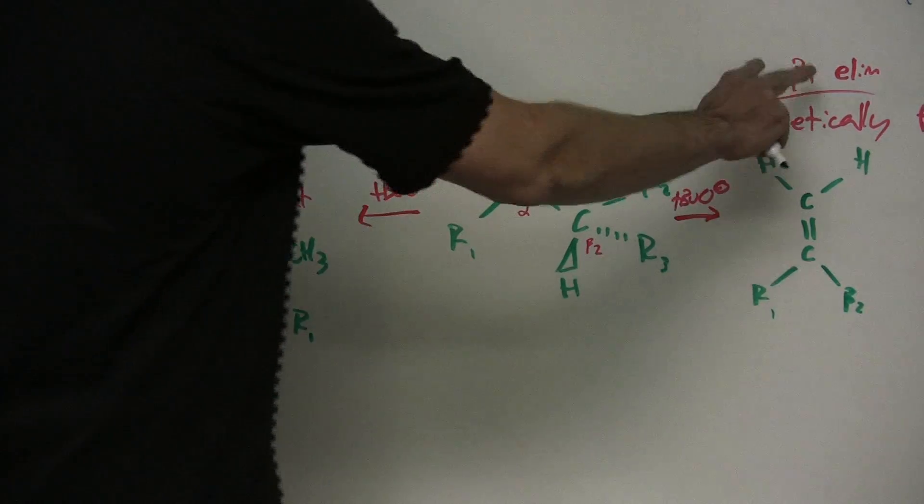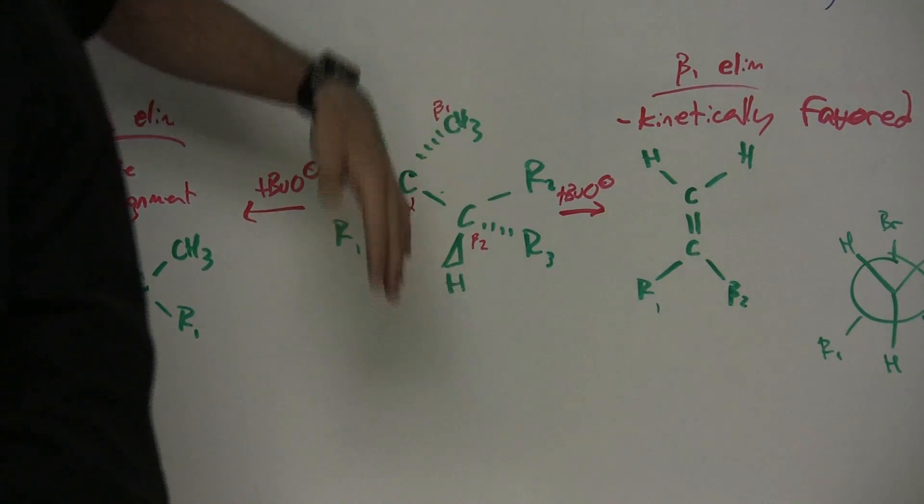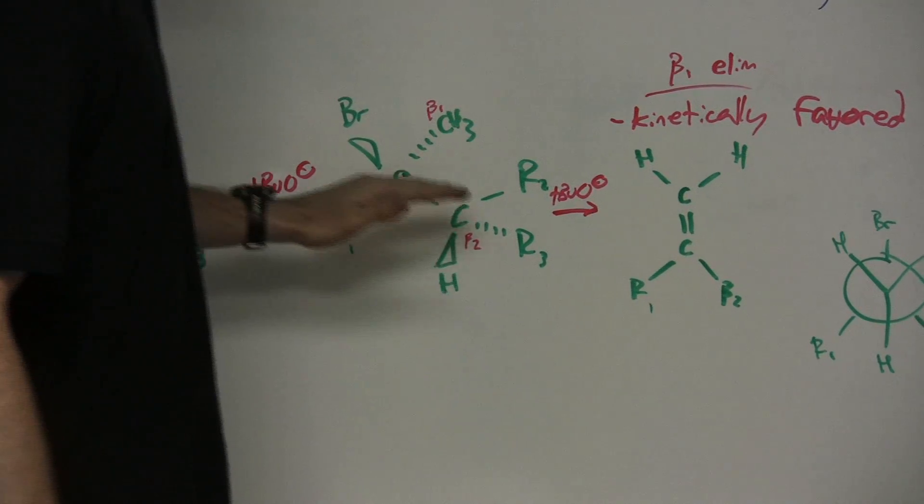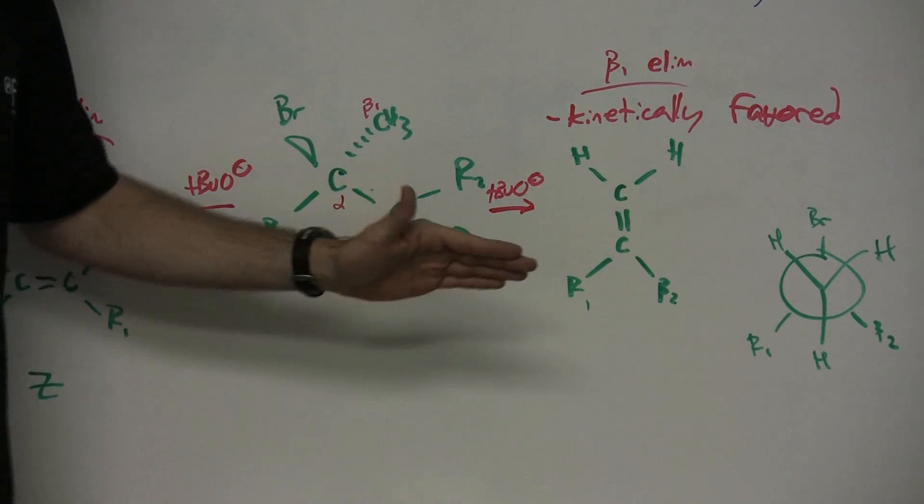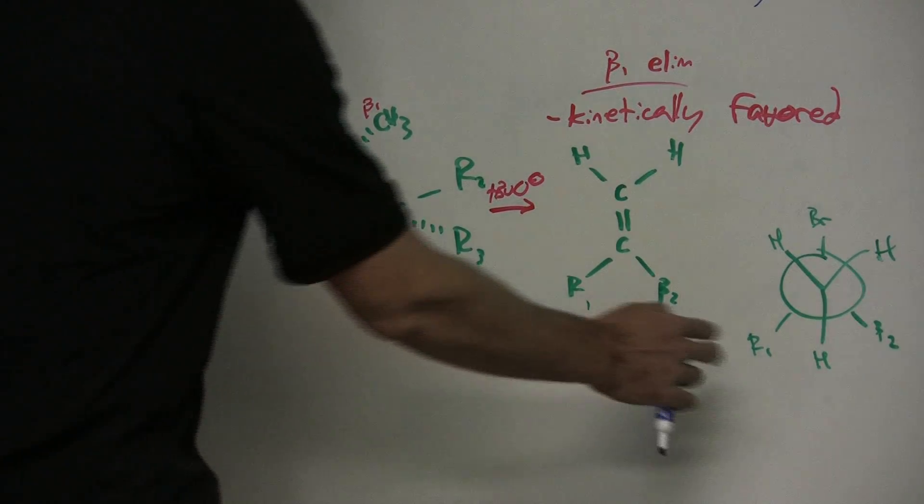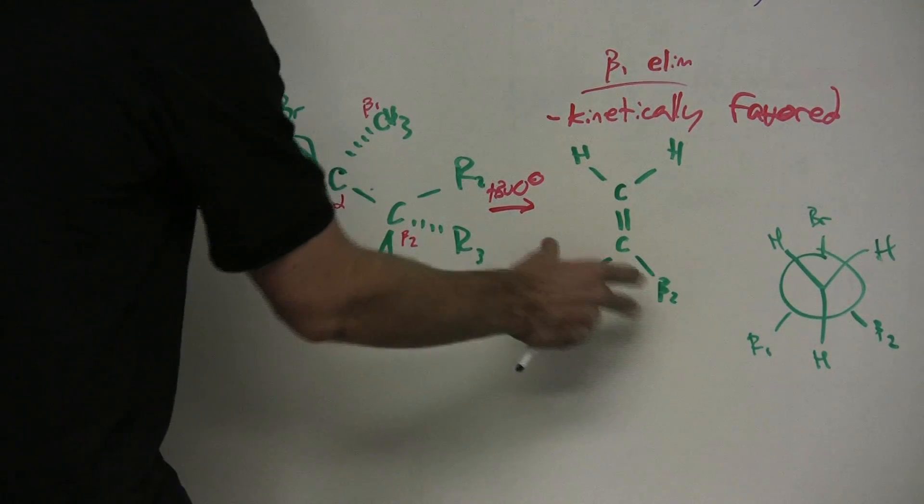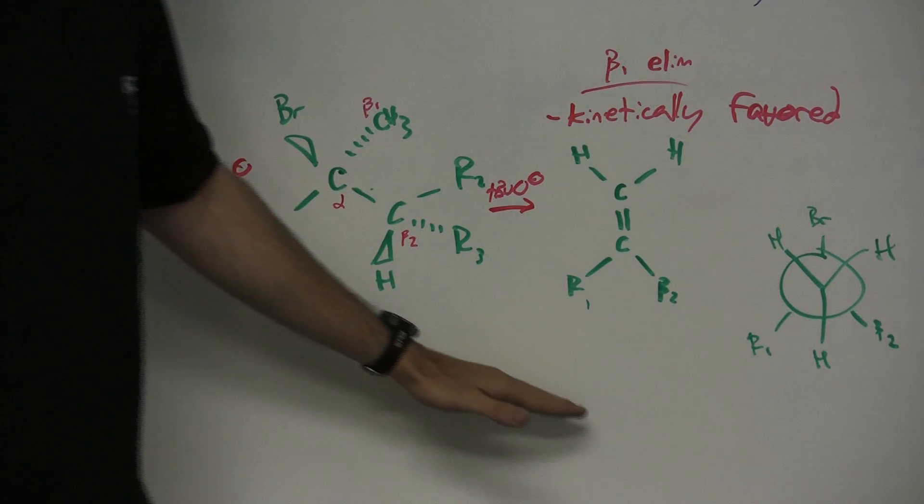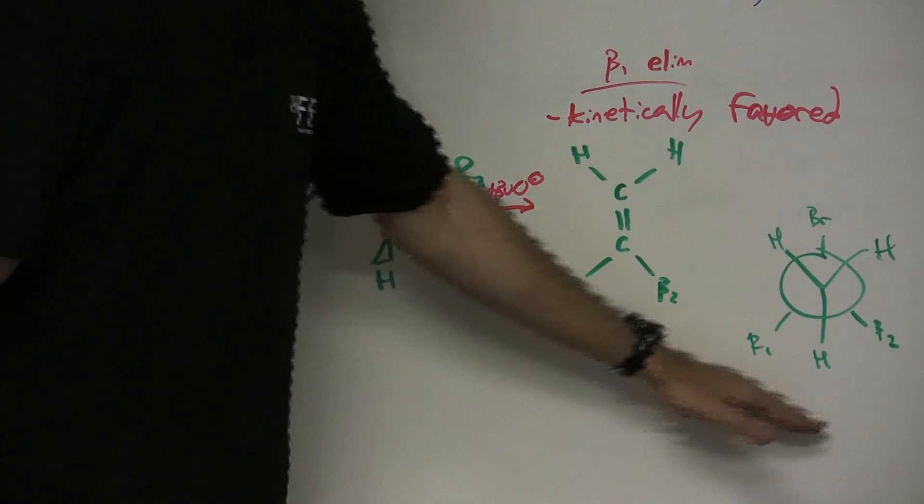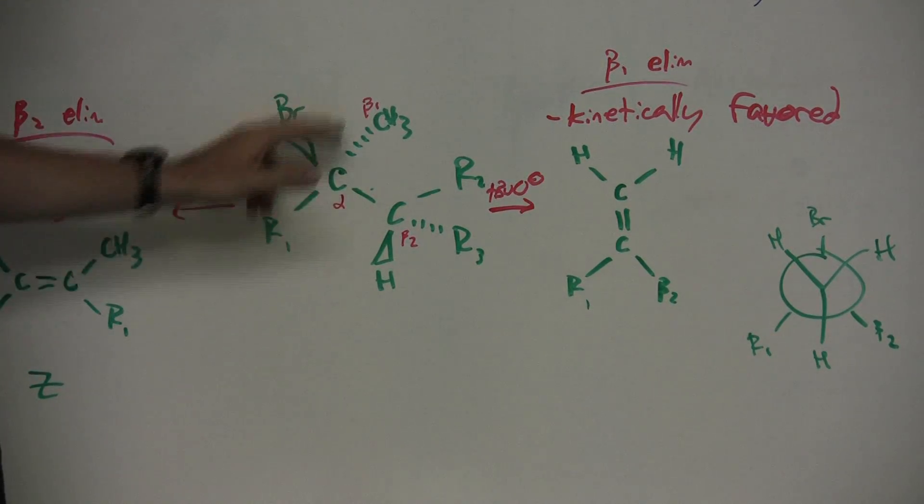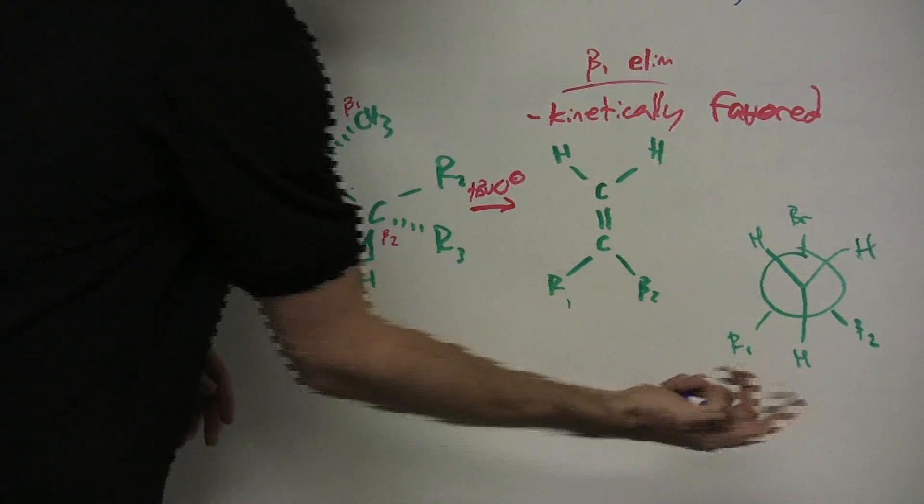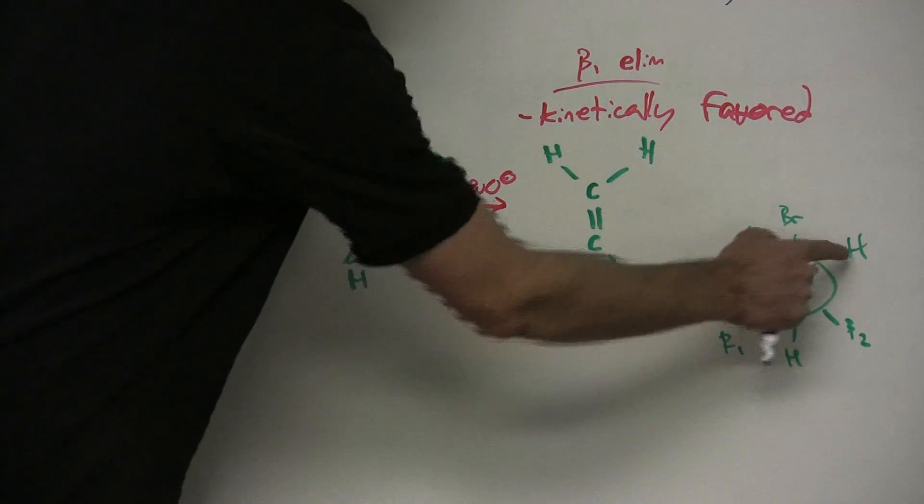If we look at beta 1 elimination, this is our kinetically favored consideration we're going to take into account. So we're going to be looking at, what's the planar configuration that will be available to form the double-bonded product? So this is where our Newman comes in handy here. I've written out what the Newman projection is down this bond here. You'll notice the front carbon here is that CH3. There's all three Hs.